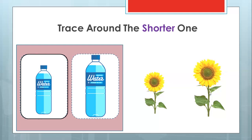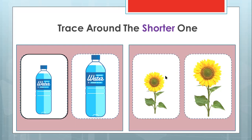Now look at the flowers. This flower is called a sunflower. What color is this flower — is it red, pink, or yellow? It is a yellow flower, and we have a bigger yellow flower here. Which one is shorter? The left one is shorter. Can you trace around it with me? Shorter flower. Good.